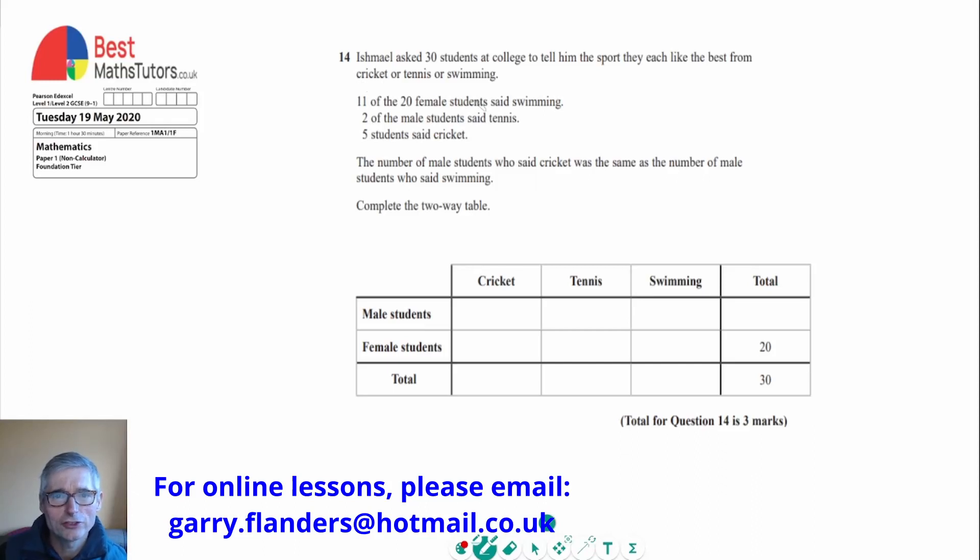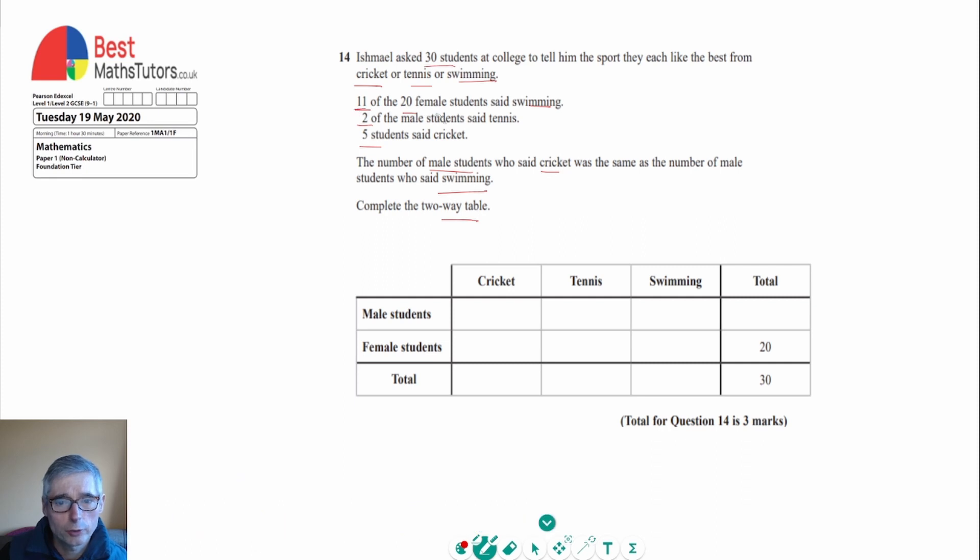This is question 14, a question about two-way tables. I'm going to go through each piece of information and add it to the two-way table here. It says that 11 of the 20 female students said swimming, so I can first put that here because where the swimming column and the female students meet is where I'm going to write that number in.